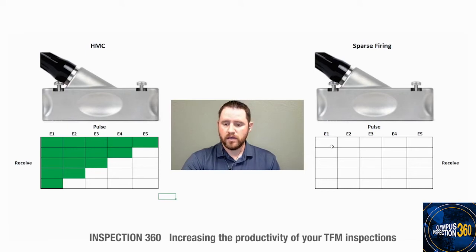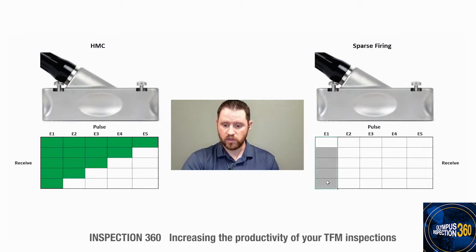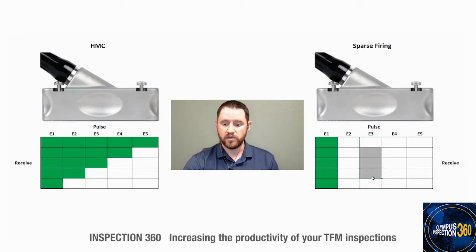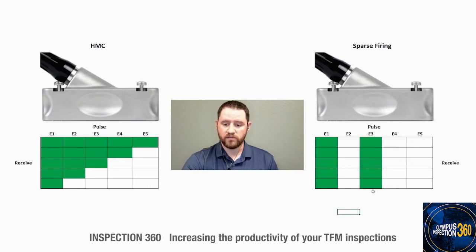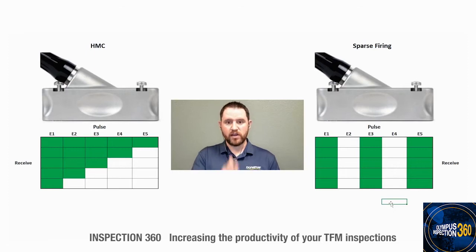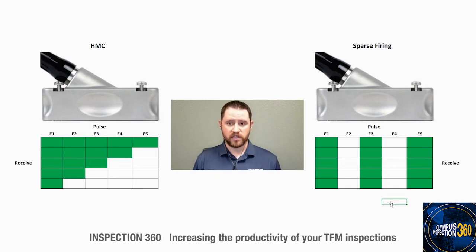In sparse mode, we might reduce firing by a factor of two. For example, we start with element number one, pulse it and receive on that pulse. In the next sequence, normally we would fire element number two, but in sparse mode we skip element two and go straight to element number three — pulsing it and listening with all other elements of the transducer. We repeat that process until we reach the end of the transducer. By firing fewer elements, that also creates less data for the instrument to manage, giving you a boost in inspection speed. Next, we'll set up the OmniScan X3 and take you through the process of configuring the sparse mode for an actual live inspection.